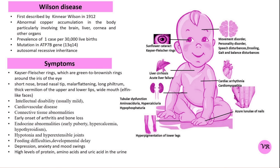Zinc is used to prevent copper absorption from the gastrointestinal tract by inducing the production of metallothionein, a protein that binds copper and prevents its absorption. Zinc therapy is particularly useful in the maintenance phase after initial chelation therapy, or as an alternative when chelation therapy is not well tolerated. Zinc is generally preferred in cases with less severe symptoms or for maintenance therapy. In children, therapy should be started as early as possible to prevent developmental issues, and zinc is often the preferred treatment for long-term management.